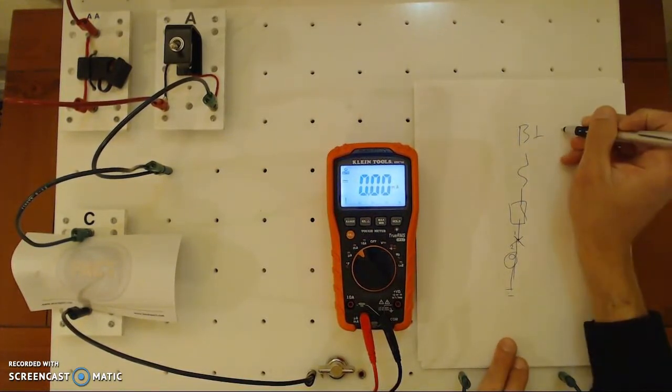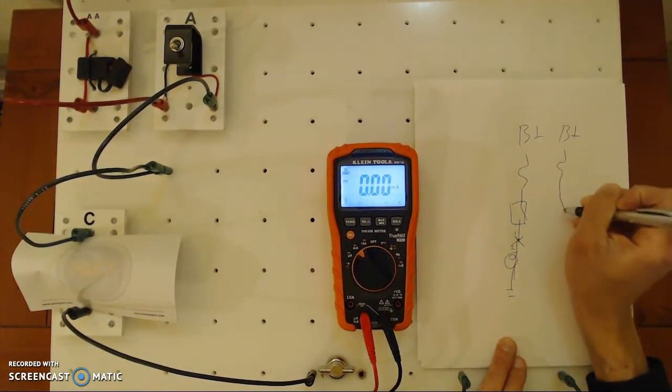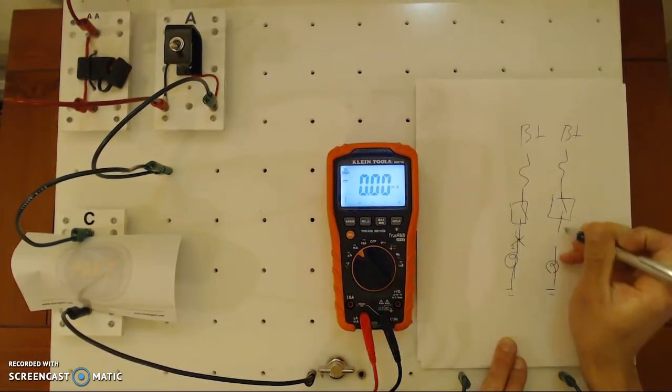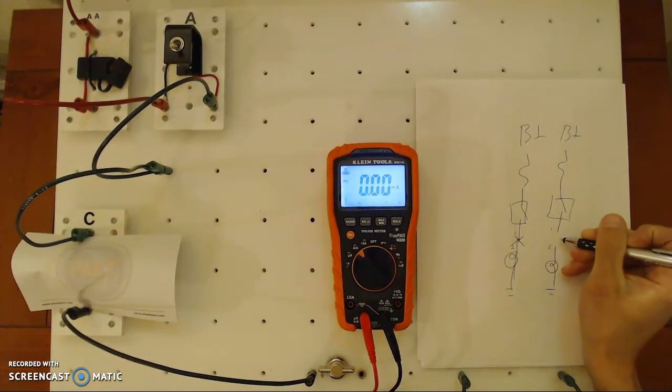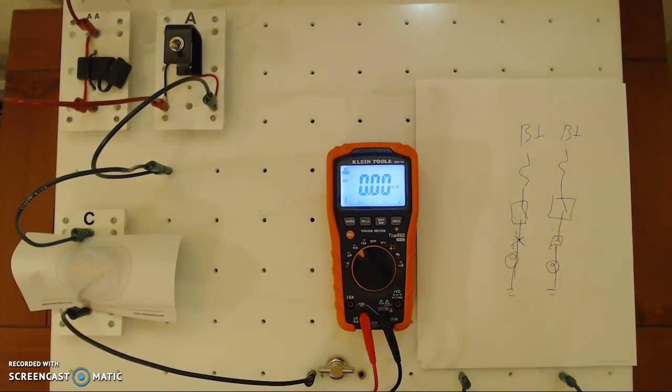If I draw that again, battery positive, here comes that fuse, here's your switch. Now I'm going to draw that disconnected. See, so I have one and two. When I disconnect it, right there, this spot right here is where I hook up my ammeter. Right there is where I hook up my ammeter, in line and series. I want all of the electrons to go through the ammeter.